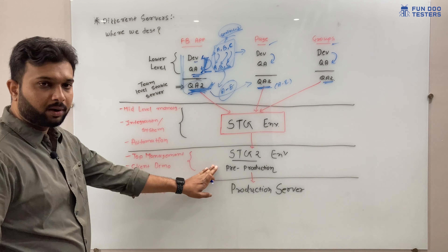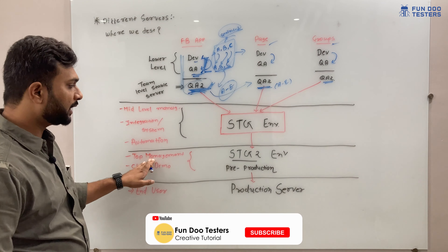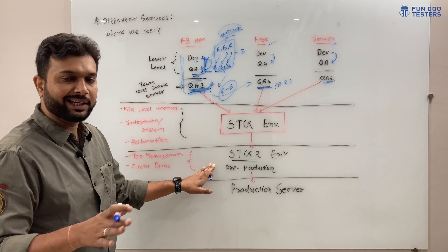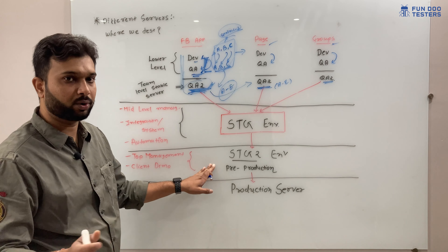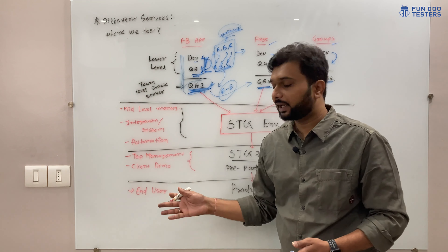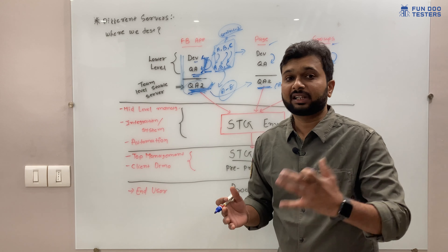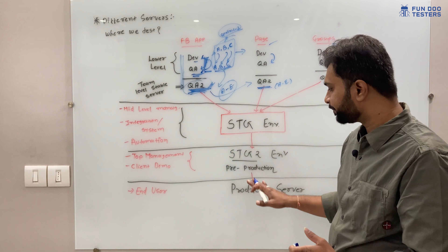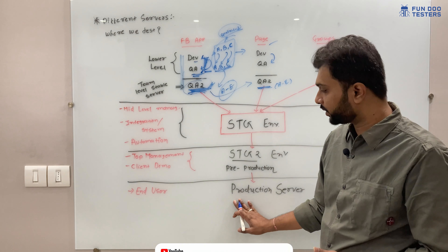After the stage environment, code is pushed to stage 2, which is similar to a pre-production environment. The purpose of the pre-production environment is for higher or top management to use the application, check that it is working fine, and perform business scenarios. Before releasing anything, a demo is given to the client or stakeholders because they are generating money from the application and need to confirm it is stable.